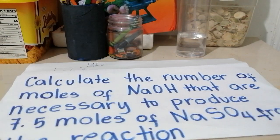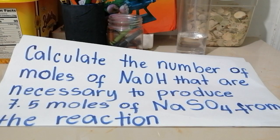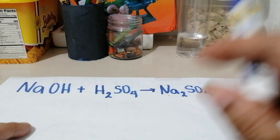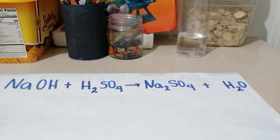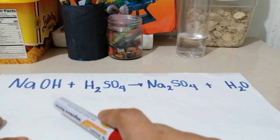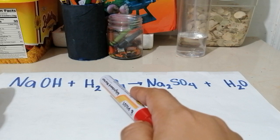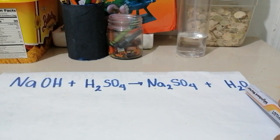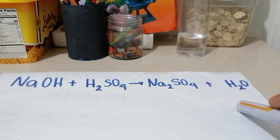In order for us to solve this problem, we need first to balance the equation. We need to refresh our knowledge about balancing chemical equations. For this equation — sodium hydroxide plus sulfuric acid makes sodium sulfate plus water — we need to balance all the elements. When we say balance, the number of moles of each element on the reactant side should be equal to the number of moles on the product side.